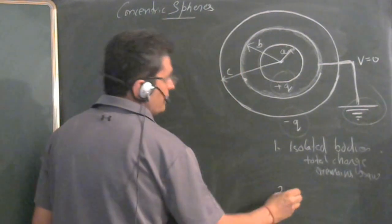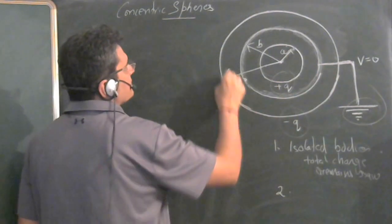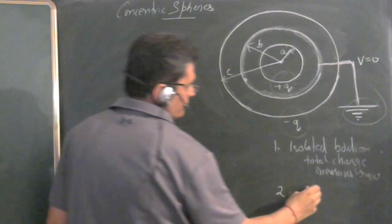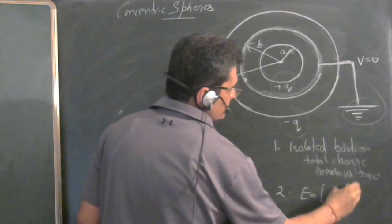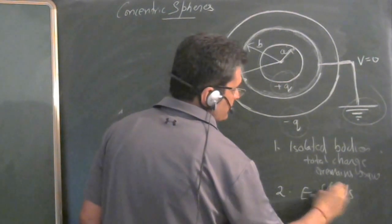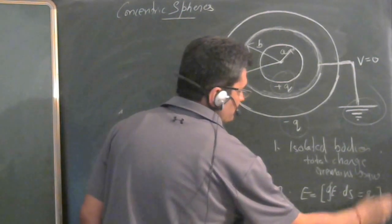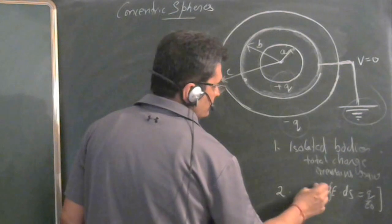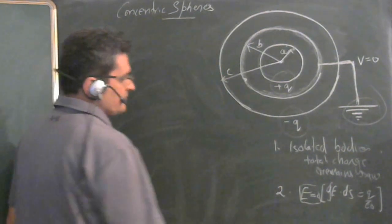Number two, the electric field inside any conducting body is zero. Apply the Gaussian surface: E dot DS integral is Q upon epsilon zero, and take E as zero because electric field inside a conducting surface is zero.